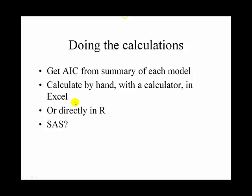So how are we going to do these calculations? Well, we can get the AIC from the summaries of each model, and also get the coefficient values, and you could calculate them by hand with a calculator or in Excel. It can also be done very easily in R, and I'll show you how to do that in the lab. I'm sure it can be done in SAS, I have no idea how easy it is.